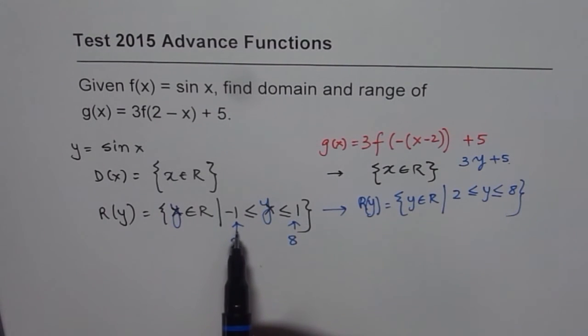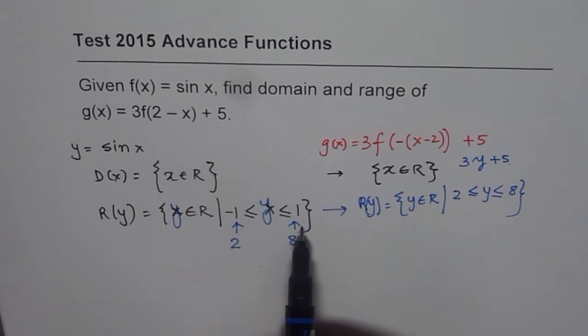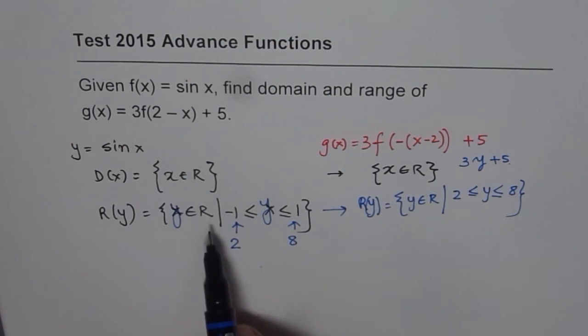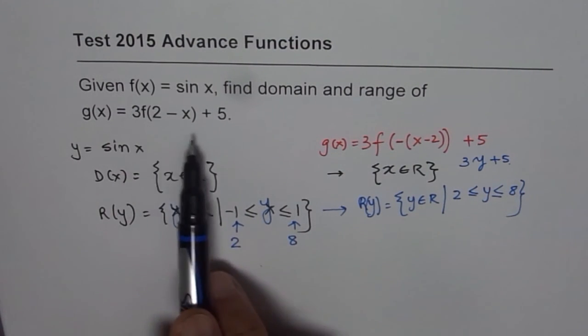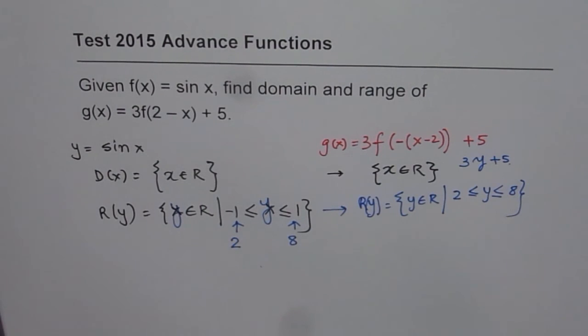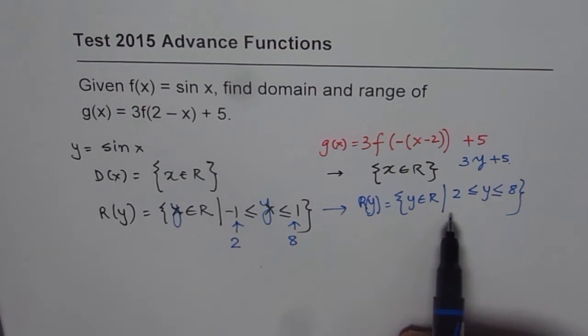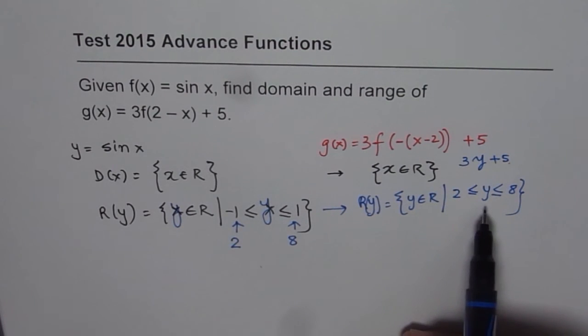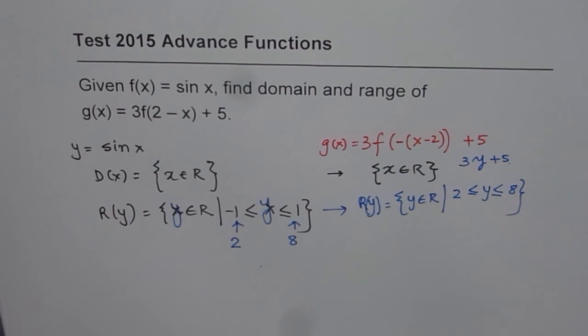That is how you can straight away find your domain and range from the function using transformation. You could always sketch the function and also find the answer, but I prefer doing it this way. You can sketch and find or you can just translate or transform the function and get the points. I hope that helps. Thank you.